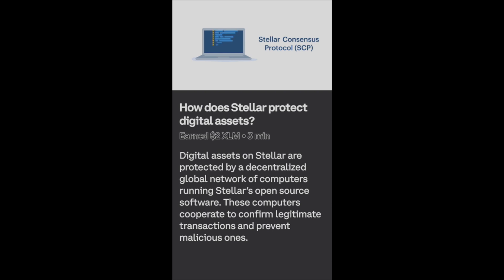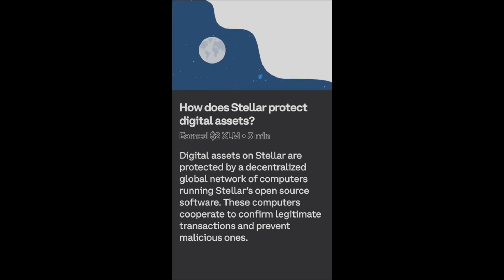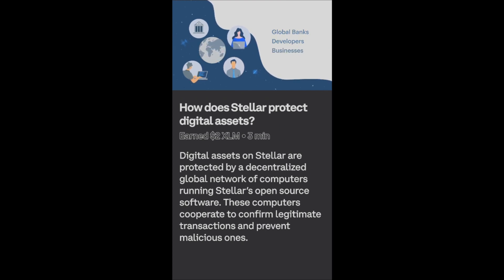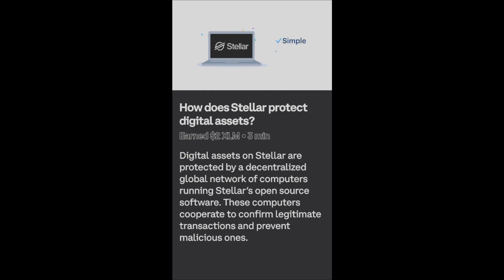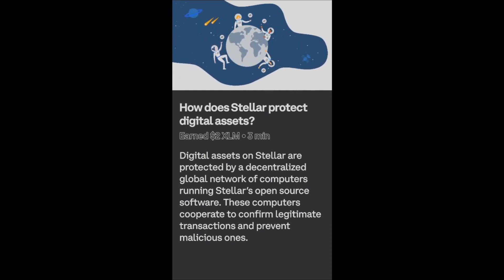The Stellar Consensus Protocol allows computers running Stellar to process transactions in under five seconds without using a significant amount of electricity, and for a very small transaction fee. Global banks, developers, businesses — anyone who wants to transfer money via the Stellar network — can run Stellar nodes today. Stellar is simple to set up, free to use, and above all, it's open to everyone. That's a big improvement over today's international financial infrastructure.